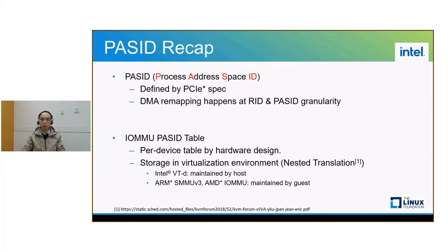PASID stands for Process Address Space ID. With the introduction of it, DMA remapping happens at the request ID and PASID granularity. To achieve such isolation granularity, platform vendors should also support IOMMU PASID table. It is a per-device table by hardware design, and its storage in virtualization environments differs across vendors. Intel VT-d is maintained by host IOMMU-assisted translation, but for ARM SMMU version 3 and AMD IOMMU it is maintained by guest-assisted translation.